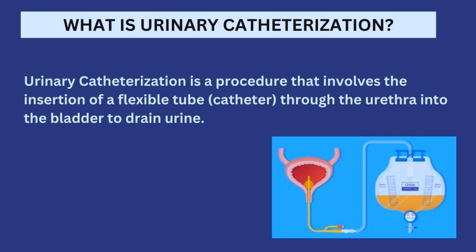Simply put, urinary catheterization is a procedure that involves the insertion of a flexible tube, called the catheter, through the urethra into the bladder to drain urine. Please understand that there are other modes of catheterization — cardiac catheters, nasal catheters, and so on — but specifically for this video we're talking about urinary catheterization, so don't make the mistake of defining catheterization solely as the procedure to drain urine.